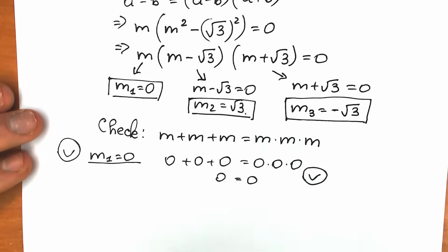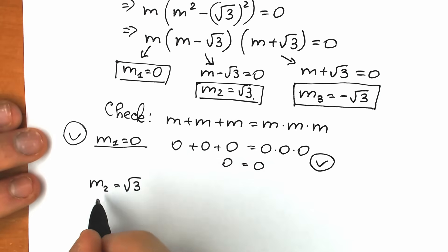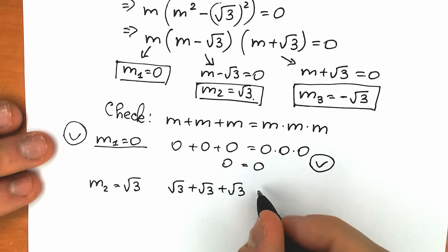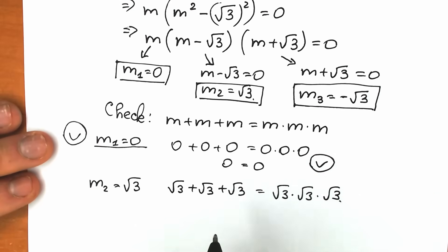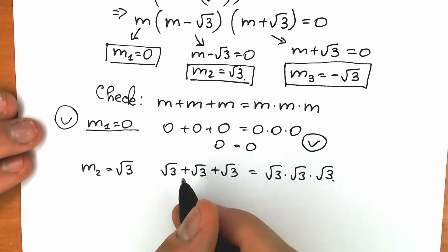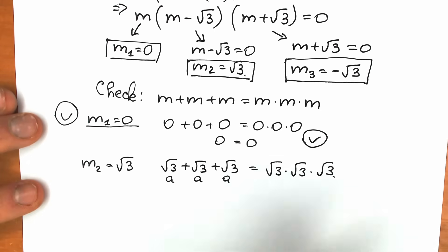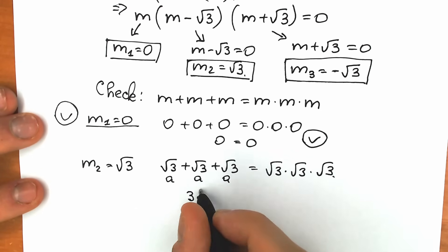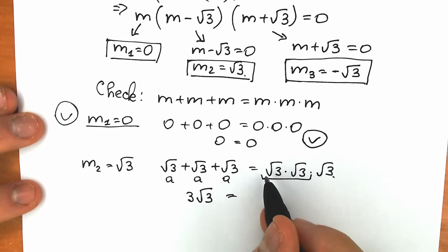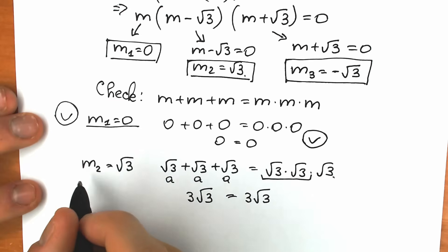Now let's check m₂ equals √3. On the left side: √3 plus √3 plus √3 — adding three same elements gives 3√3. On the right side: √3 times √3 times √3 equals 3 times √3, which is 3√3. Both sides equal 3√3, so the second root is also valid.